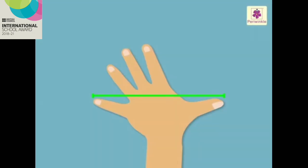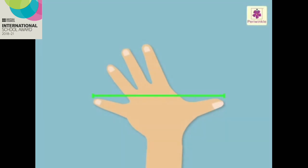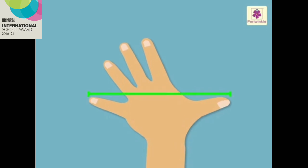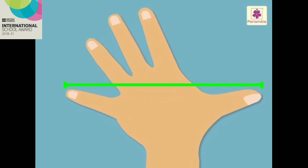What do you mean by hand span? Hand span is the distance from the tip of the thumb to the tip of the little finger on an outstretched hand.